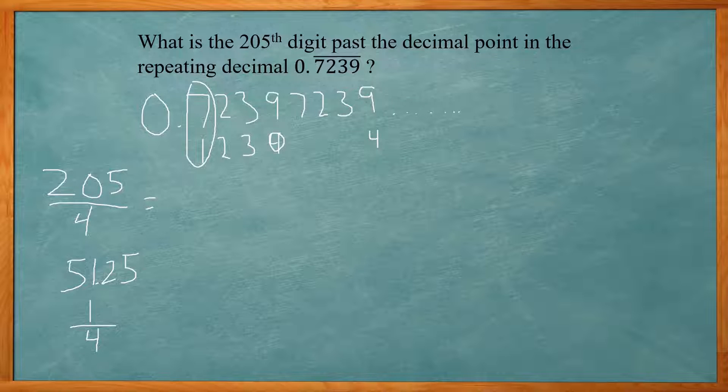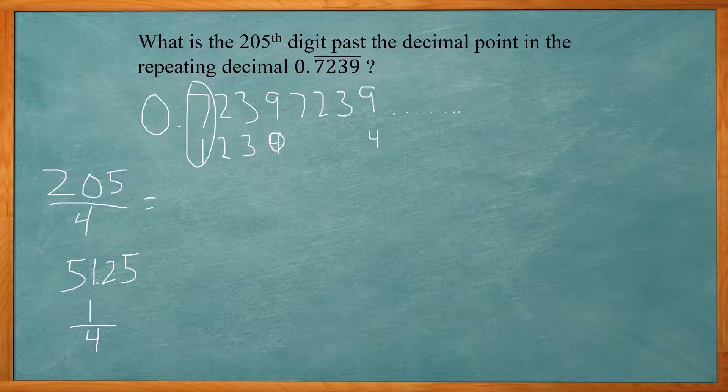Every time I have a remainder of 2, it'll be the second digit. Every time I have a remainder of 3, it'll be the third digit. And if I have no remainder, it'll be the fourth digit. So that's how you find the nth digit of a repeating decimal.